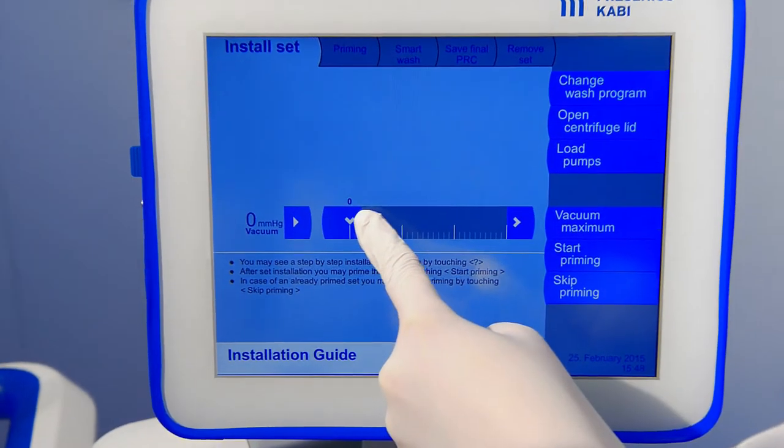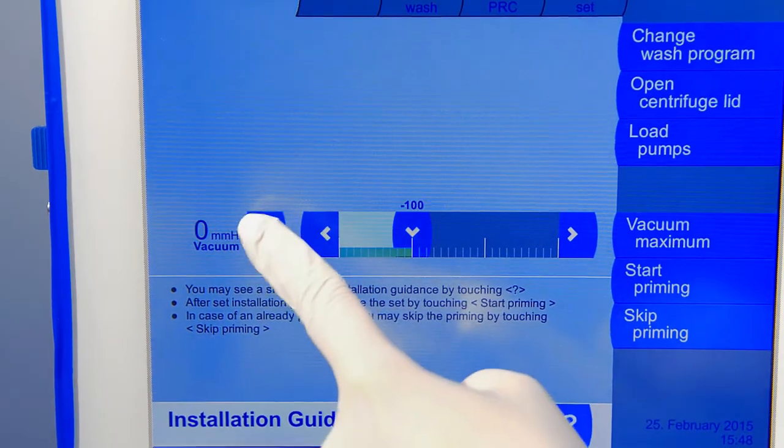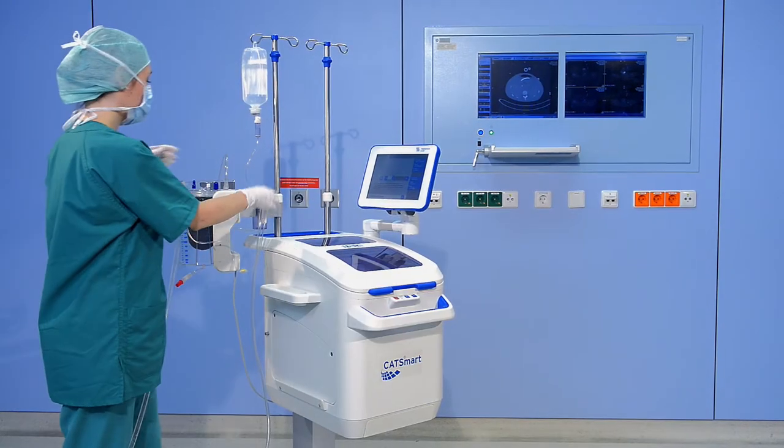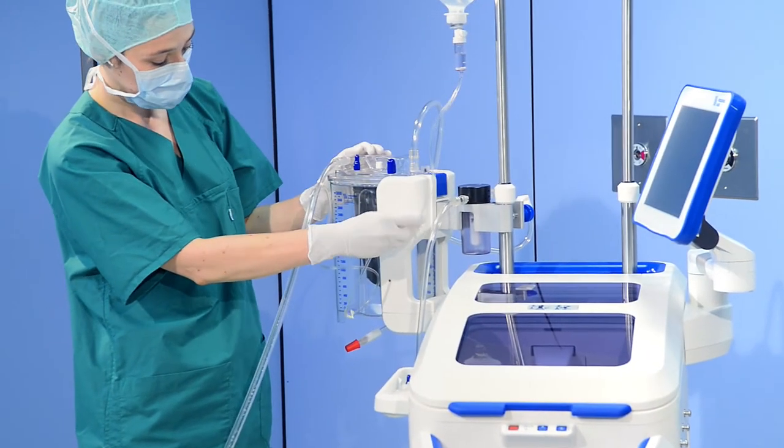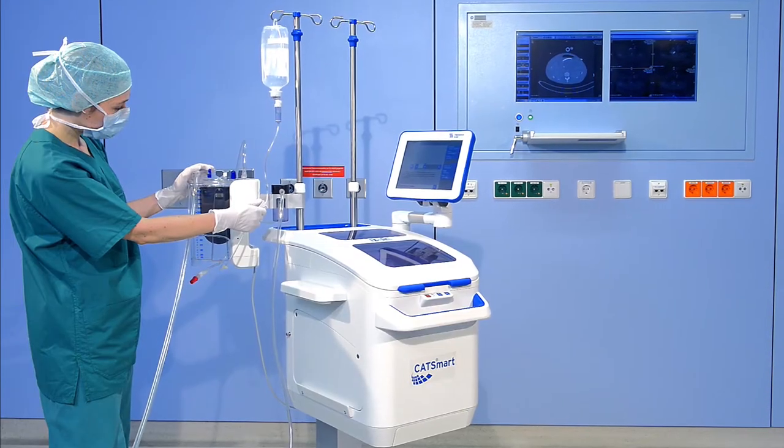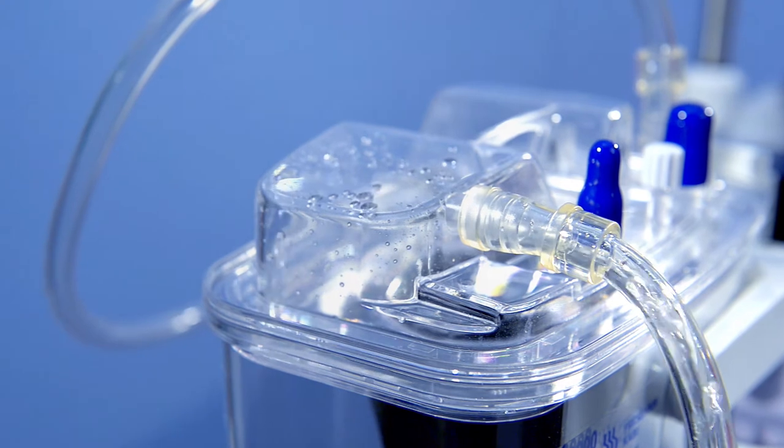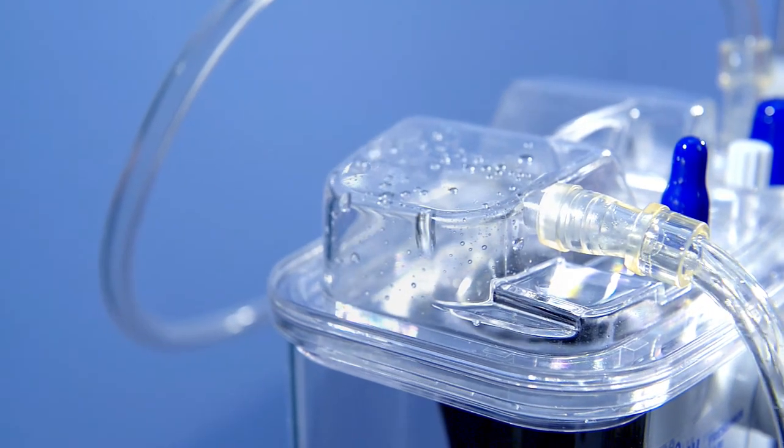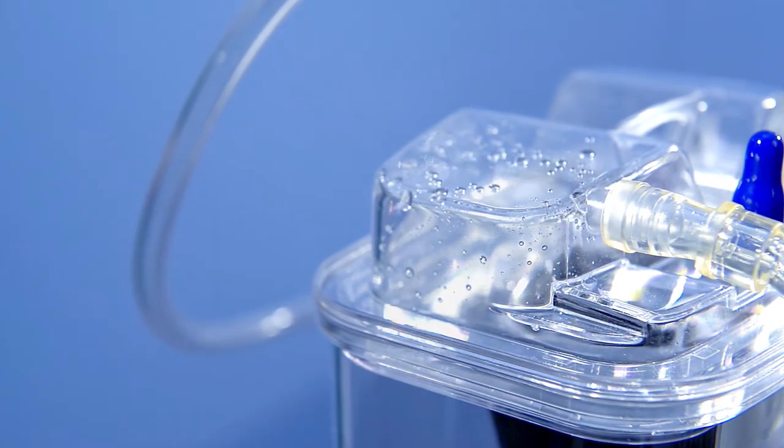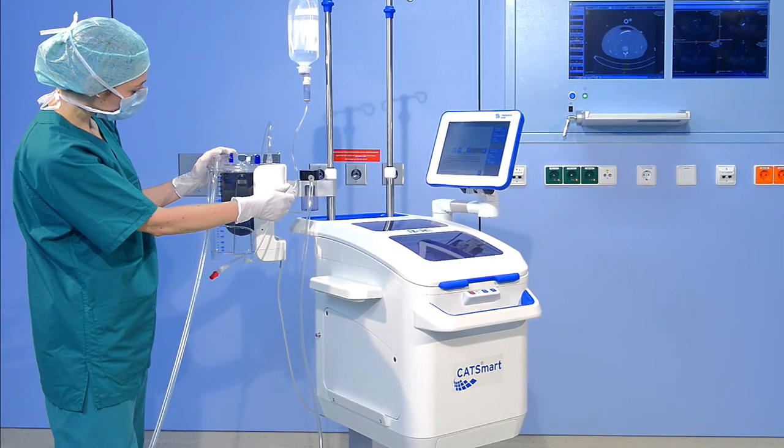Adjust vacuum via the touch screen to minus 100 mm mercury. When suction has begun, open the roller clamp below the drip chamber and prime the suction line and filter with 250 milliliters of anticoagulant. We recommend heparin. Afterward, adjust the flow to 60 drops per minute.